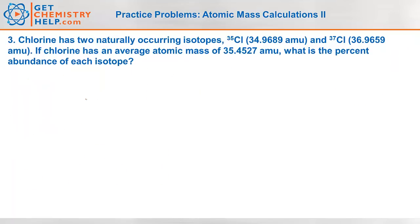Okay, one last calculation. This one is very similar to our last one. Chlorine has two naturally occurring isotopes: chlorine-35 with an atomic mass of 34.9689 AMU and chlorine-37 with an atomic mass of 36.9659 AMU. If chlorine has an average atomic mass of 35.4527, what is the percent abundance of each isotope? So once again we have two isotopes, two masses, and we have to find both abundances. This time instead of looking up the average off the periodic table, they went ahead and gave it to us out to four decimal places.